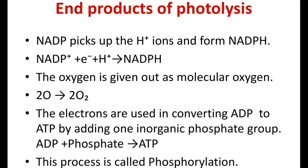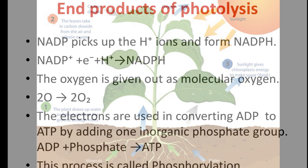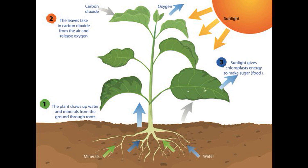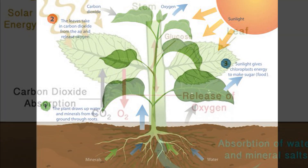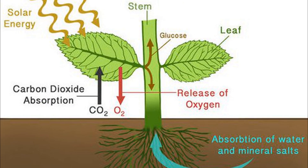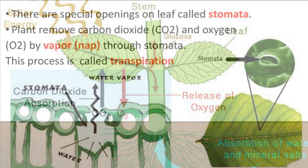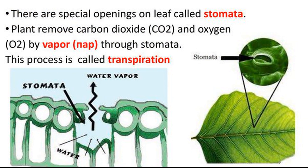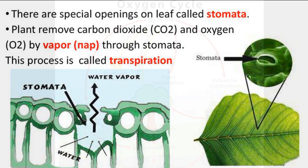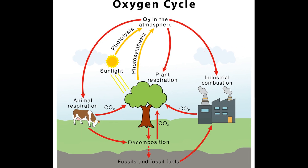The end products of photosynthesis are glucose and oxygen. The glucose is either immediately utilized by the cells or stored in the form of insoluble starch. Some of the oxygen released may be used in respiration in the leaf cells, but the major portion diffuses out into the atmosphere through the stomata. Even this oxygen is not a waste, as it is a vital gas needed by all organisms for respiration.